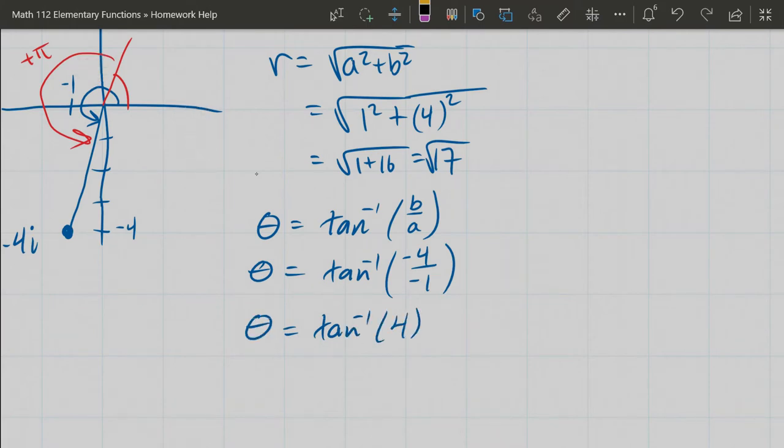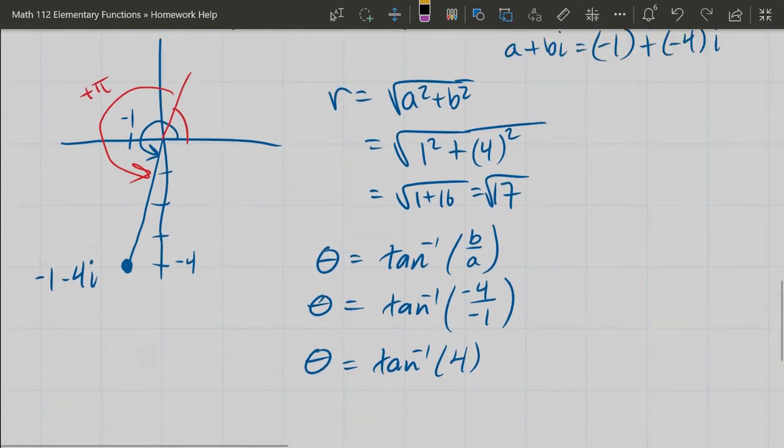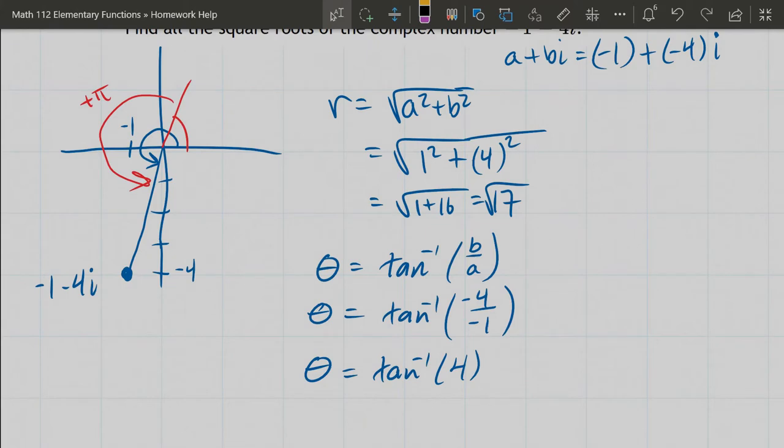This is not an angle I know about, so it's not going to turn into something nice, a nice multiple of π. I do have to add, however, a half rotation because our x-coordinate was negative.